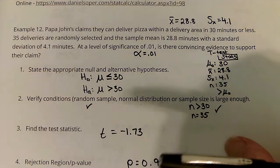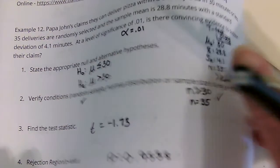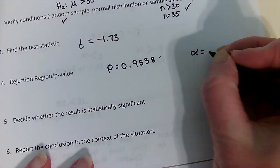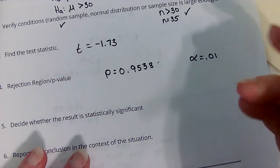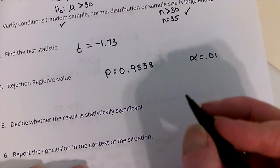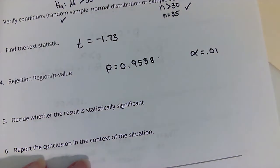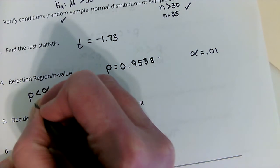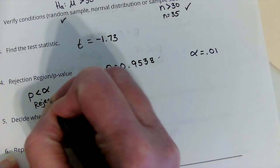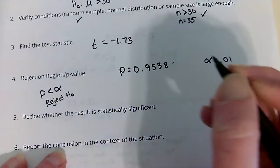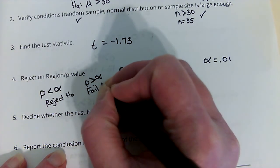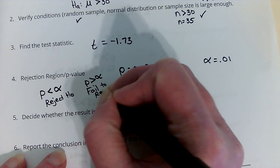Now remember, how we decide this is we compare the p-value to our alpha, and alpha in this case was 0.01. So if p is less than alpha, we reject the null. If p is greater than alpha, we fail to reject the null.